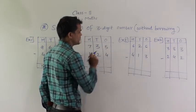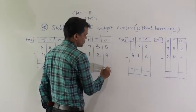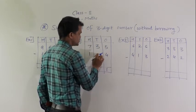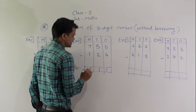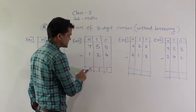Next example: 5 minus 4, 1. 3 minus 2, 1. 7 minus 1, 6. Read this number: 611.